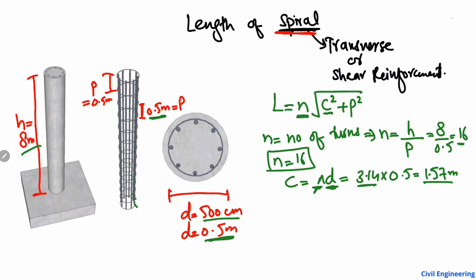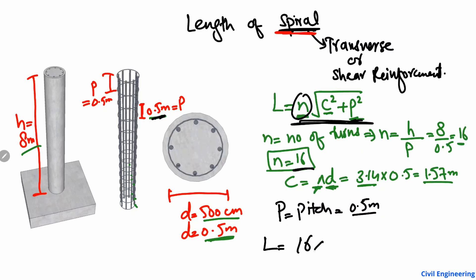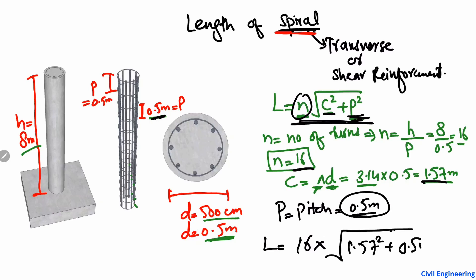P is the pitch, which was given to us as 0.5 meters — the distance between two turns. Now putting all these values into the equation: L is equal to N, which is 16, multiplied by the square root of C squared — 1.57 squared — plus P squared — 0.5 squared. Squaring these values, adding them, and taking the square root, we get a value of 26.36 meters.